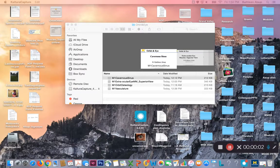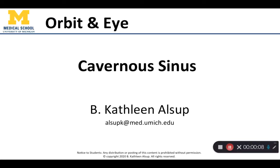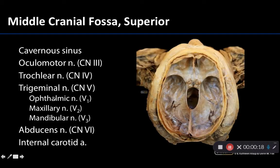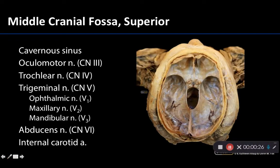Let's get talking about the cavernous sinus. We discussed it a little bit in the cranial cavity and brain lab when we talked about the dural venous sinuses, and that's exactly what the cavernous sinus is — an example of one of those dural venous sinuses, but it's unique in a few ways. One is that it's fairly expansive. Let's figure out where it is located on this particular image.